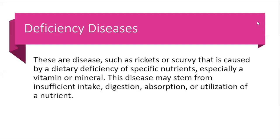So these are called deficiency diseases — diseases such as rickets or scurvy that are caused by a dietary deficiency of a specific nutrient, especially a vitamin or mineral. These diseases may stem from insufficient intake, digestion, absorption, or utilization of a nutrient. So deficiency diseases occur because we do not take in the amount of nutrient we should, or our body does not digest or absorb the nutrient, or our body doesn't use it the way it should.